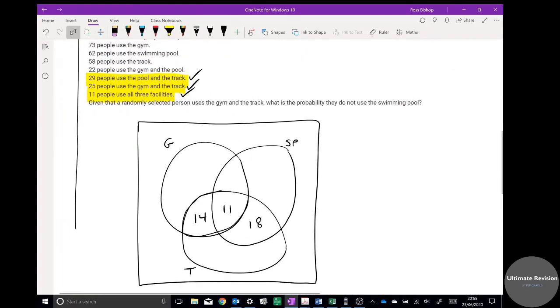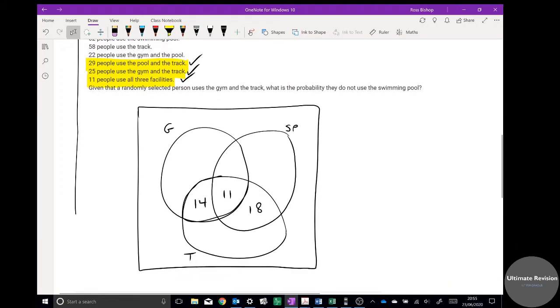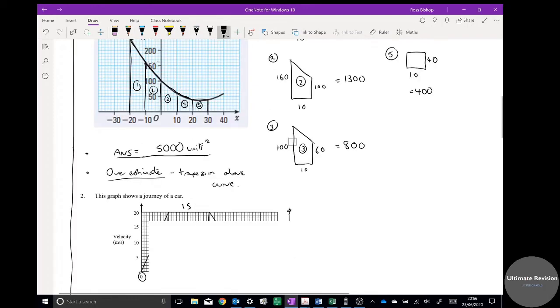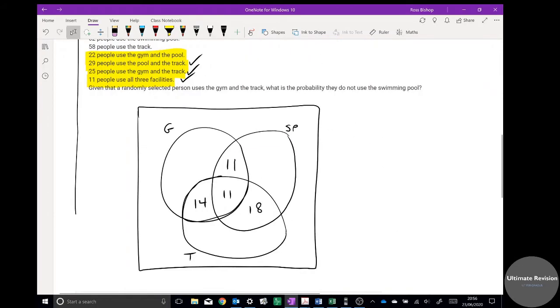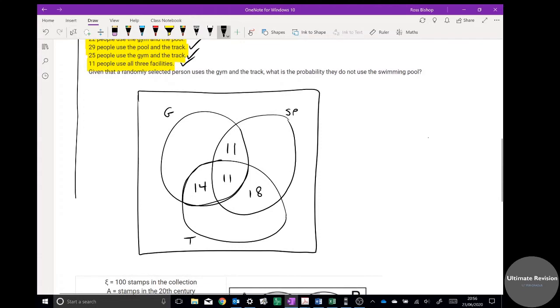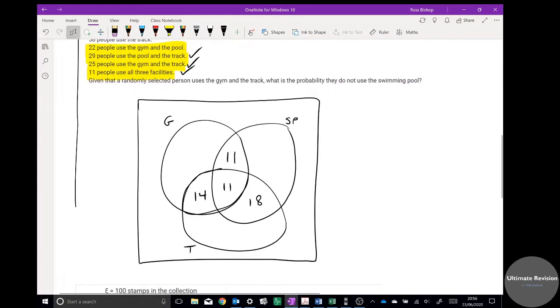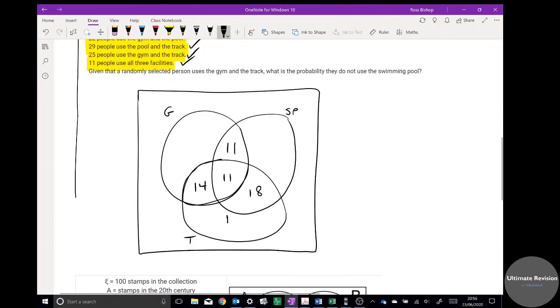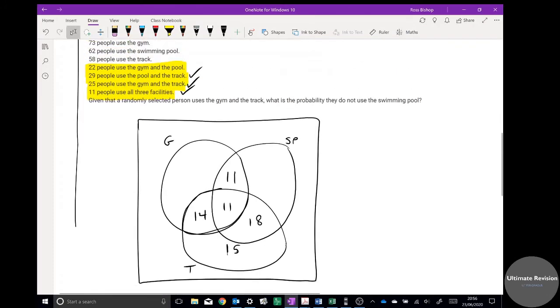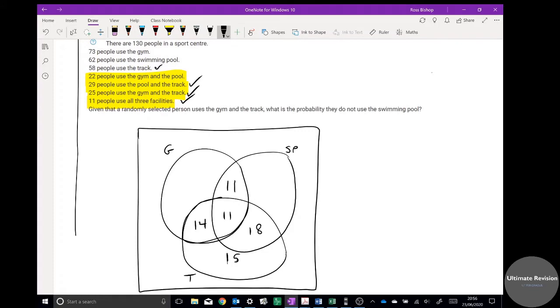Okay, sorry about that. So we've got 22 use the gym and the pool, so that means 11 must go in there. Again, I can tick that one off. Next one, 58 use the track, so that whole track bubble is up to 58, so if I do 58 for the track, 15 is going to go in there. I've done that one.